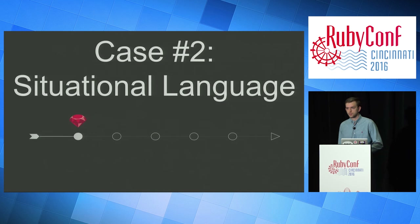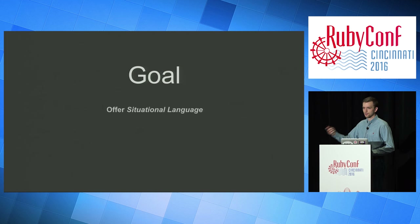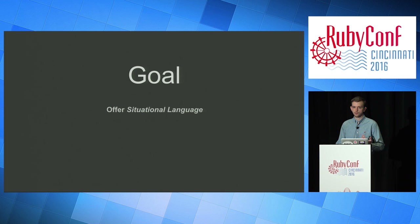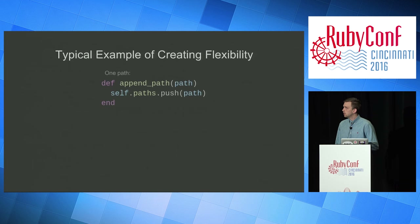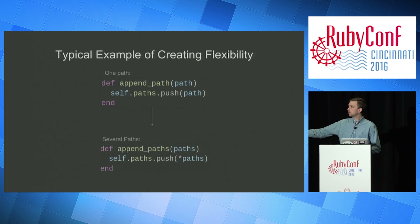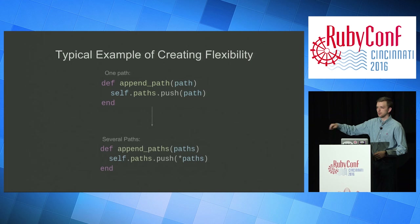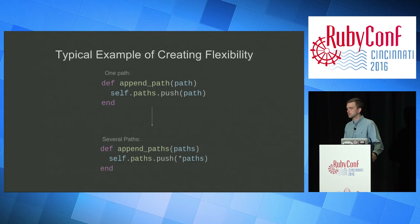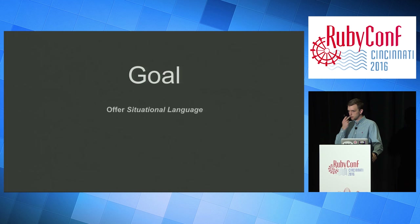Moving on to case number two: situational language. I'm going to define it as context-specific method names that rely on one implementation. We want a flexible interface for our library, so we may want to offer multiple method names, but they still rely on one single implementation. A typical way to create flexibility is very iterative — you define a path method, pass in a path, push it onto a paths variable. But if you have several paths, it makes sense to pass in an array. The problem is it's repetitive, and it would be nice to get both at the same time.